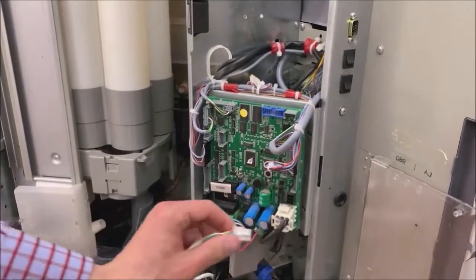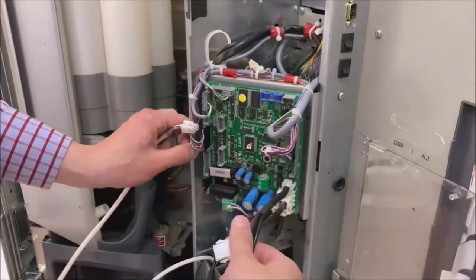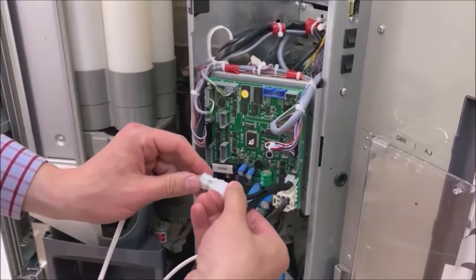For vending machines operating in MDB mode, U016 MDB cable is used, which is connected to the gap of the payment bus between the vending machine and the payment device.